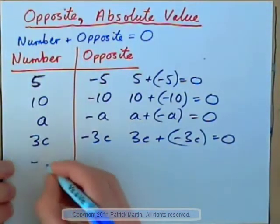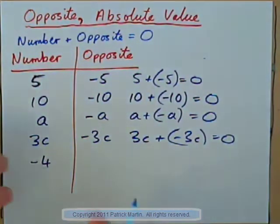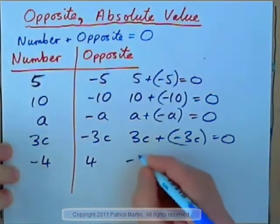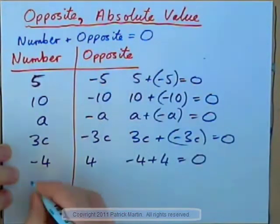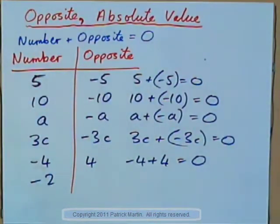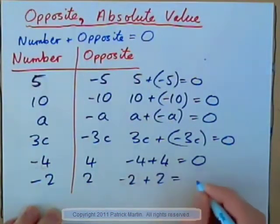What about this, though? The number is negative 4. What's the opposite of negative 4? Well, what added to negative 4 gives 0? Obviously, positive 4, right? Because negative 4 plus positive 4 gives 0. So what's the opposite of negative 2? Well, positive 2. Negative 2 plus positive 2 is 0, right?